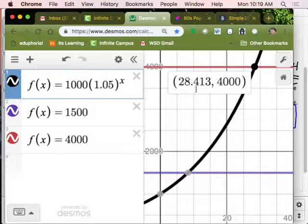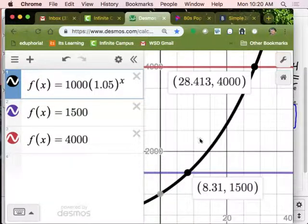And I can find that point of intersection to be at 28.413. So, after roughly 28.413 years, I would have a balance of $4,000. So, by looking at those points of intersection, with regards to the graph of the original function, 1,000 times 1.05x, I can anticipate how many years before I reach each of those values. So, the answer to the part A there would be 8.31 years, and part B would be 28.413 years.